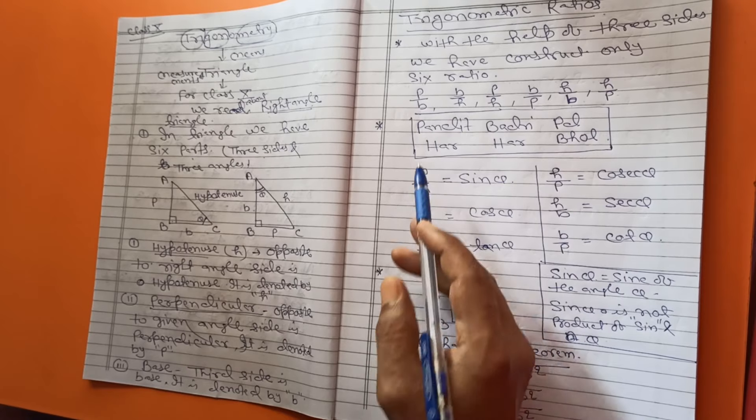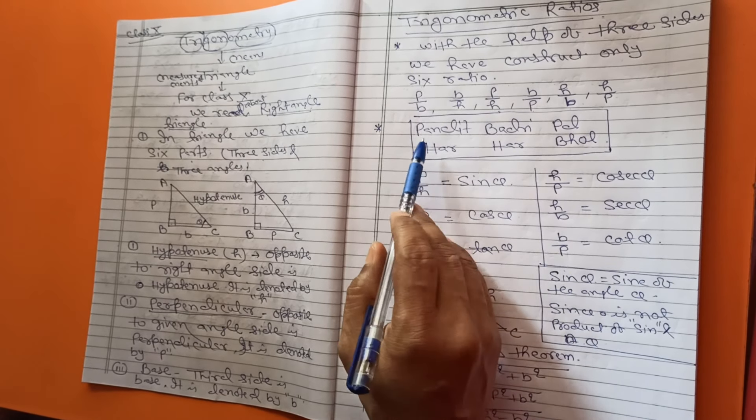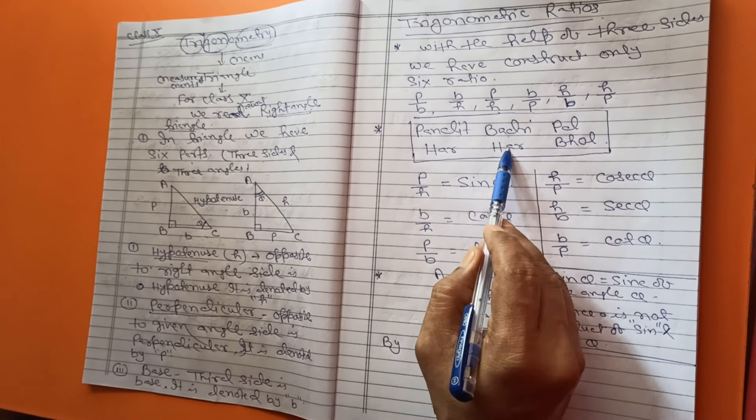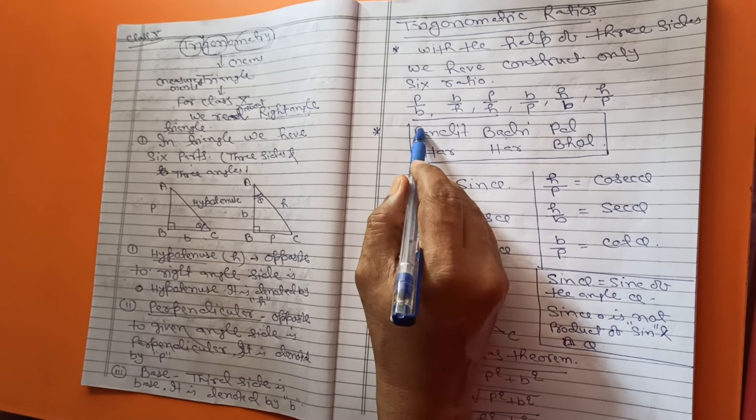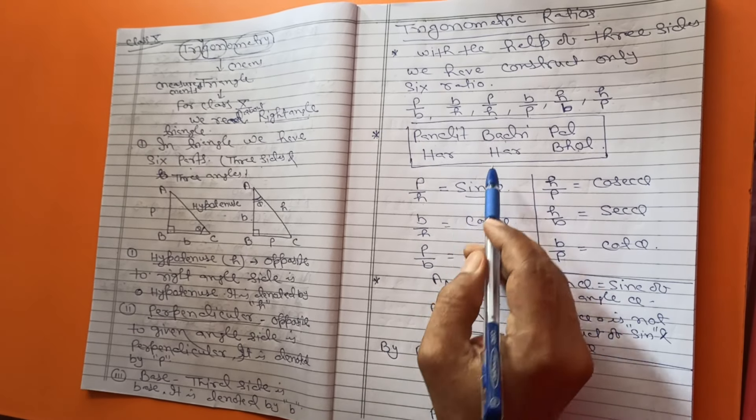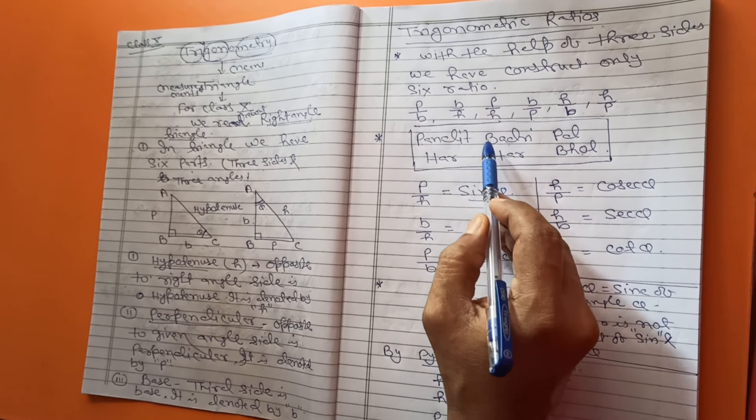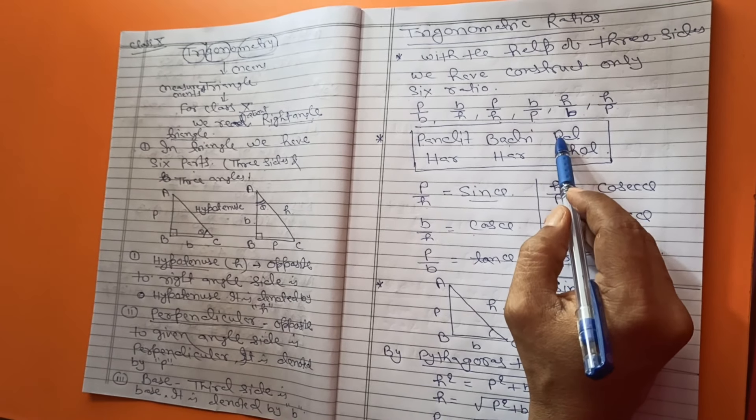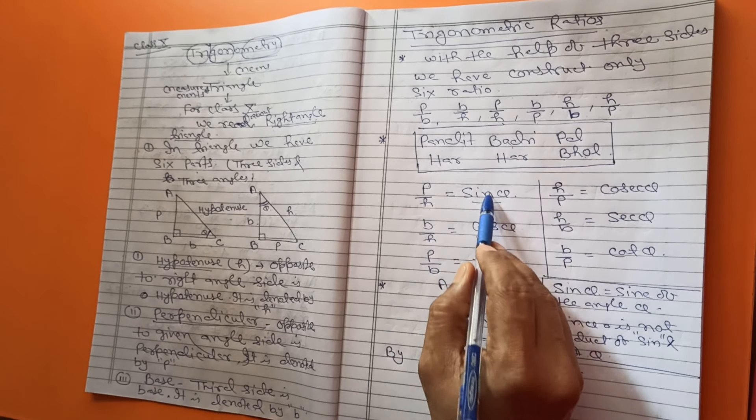How can you remember? What is sin, cos, tan? For this purpose, you read Pandit Badri Prasad Har Har Har Bol. From Pandit, you take P. And Har, you take H. Then P by H. This is called sin. You take from Badri, B. And Har, H. So B by H. That is called cos. And Prasad, you take P. And Bol is take B. Then P by B is tan theta.